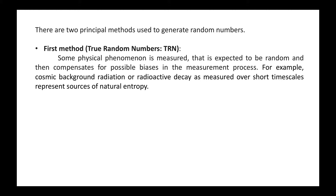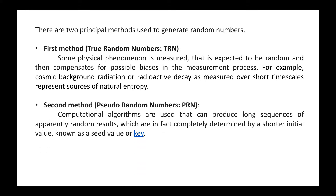The first type measures some physical phenomenon expected to be random, then compensates for possible biases in the measurement process. For example, cosmic background radiation from outer space or radioactive decay of a nucleus measured over short time scales represent sources of natural entropy, because in these events the occurrence of an event is random. This type of random number is called a true random number and their generators are called true random number generators.